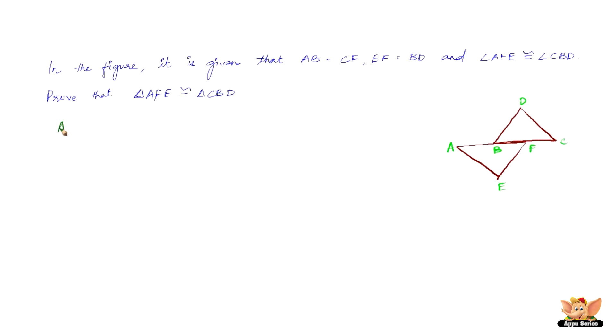Now we have AB equals CF and AB plus BF equals CF plus BF. This is because we already have in the question that AB equals CF. BF becomes the common part of the complete side AC. Therefore, we can say that AB plus BF equals CF plus BF.